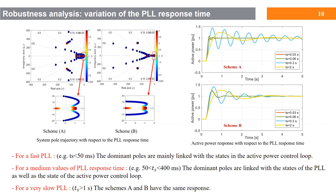We have done another robustness analysis for the schemes with PLL, that are scheme A and B, with respect to the variation of PLL response time. The result is that for a very fast PLL the dominant modes of the system are mainly linked with the active power control loop. For a medium value of PLL response time, these dominant modes are linked with either the states in the PLL or the states in the active power control loop, and there is an interaction between the PLL and active power control; however, there is no instability issue. For a very slow PLL, scheme A and B have the same response, which is actually the same as scheme C, the scheme with no PLL. Therefore, the conclusion is that there is no stability issue with including the PLL in the grid forming control in normal operation.